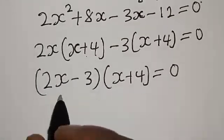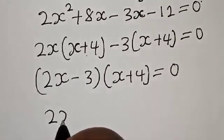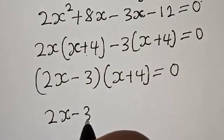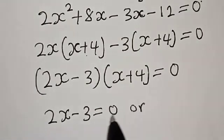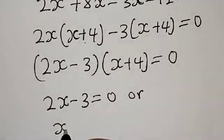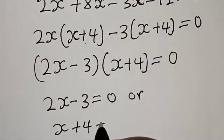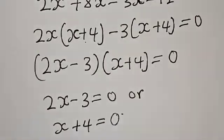Now we have 2x - 3 equals 0, or x + 4 equals 0.